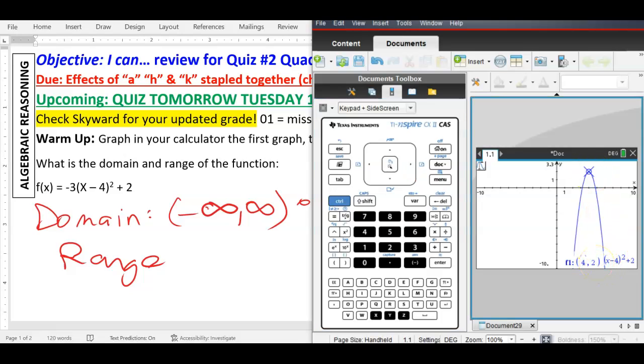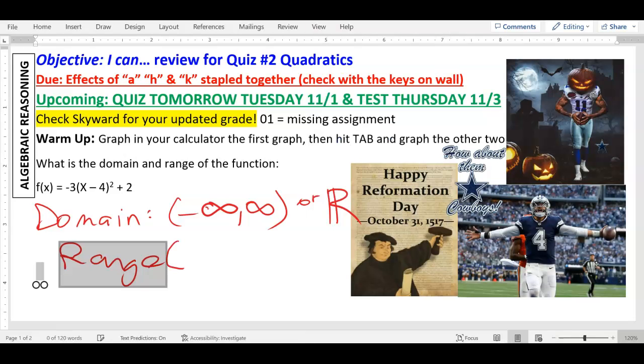So, if it goes from negative infinity up to 2, how do we write that? What do I write first? Parentheses or a bracket? Parentheses what? Negative infinity up to 2. Do I put a bracket or a parentheses? Okay. Because it touches, right? It actually has a point at 2. You have to put a bracket. It includes. It's inclusive of 2. Okay.